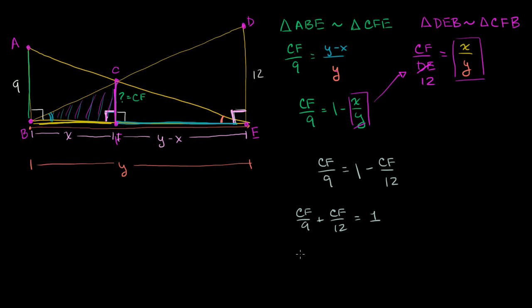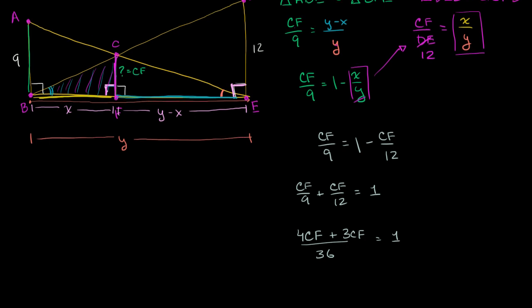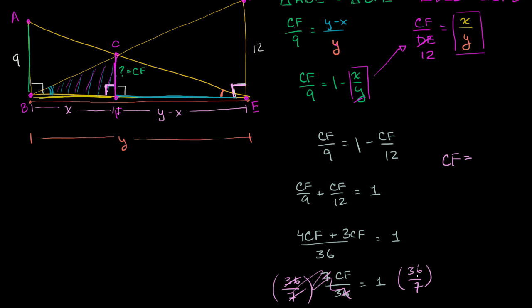Finding a common denominator of 36: CF over 9 becomes 4CF over 36, and CF over 12 becomes 3CF over 36. So 4CF plus 3CF over 36 equals 1, giving 7CF over 36 equals 1. Multiplying both sides by 36 over 7, we get CF equals 36 over 7.